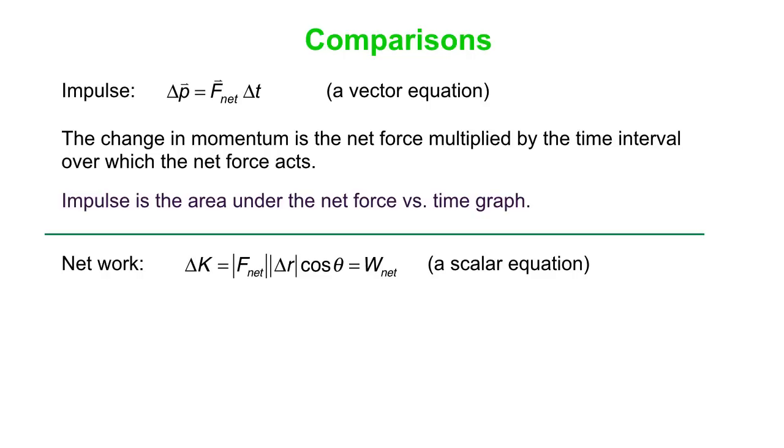Let's talk about this new idea, which is work. In particular, we'll start with the net work, the work done by the net force. Instead of delta p, we have delta K, K being the kinetic energy. There's a change in kinetic energy produced by a net force. You calculate that as the magnitude of the net force multiplied by the magnitude of the displacement, delta r, multiplied by the cosine of the angle between those two vectors. We call that net work. A key difference between the impulse equation and the net work equation is impulse and momentum are vectors, work and energy are scalars.